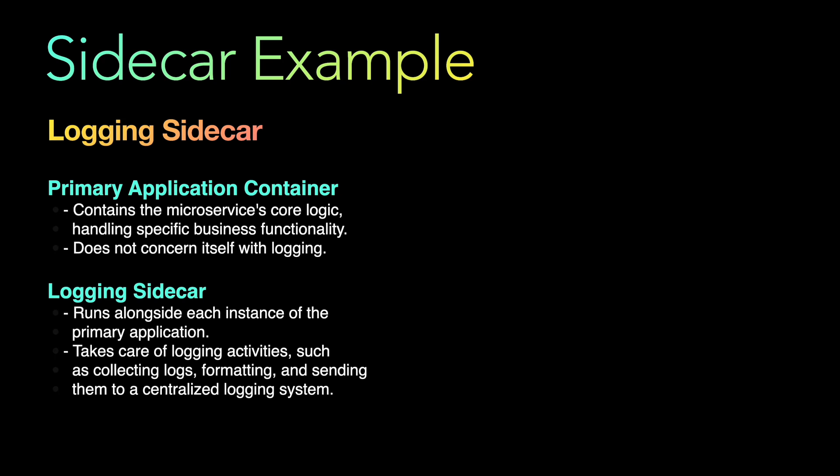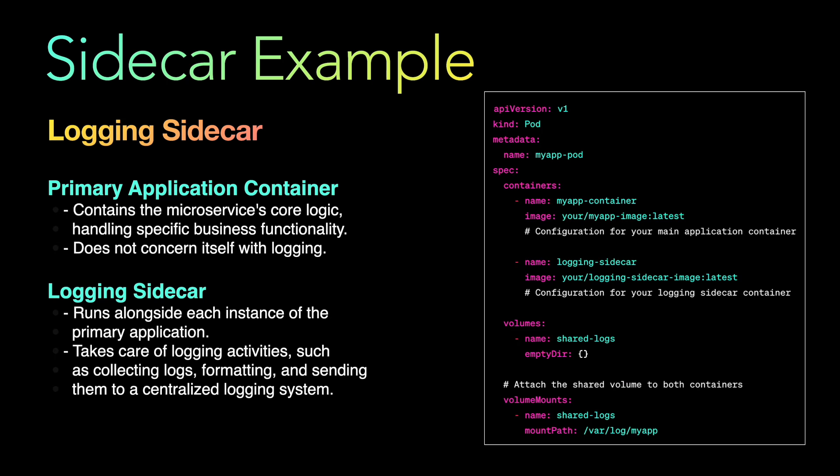Implementing a sidecar container involves configuring your container orchestration platform to run two containers — the main application and the sidecar — within the same pod. Here is a simple example using Kubernetes, one of the popular container orchestration systems. Consider a scenario where your primary application is a web server and you want a sidecar container for logging.